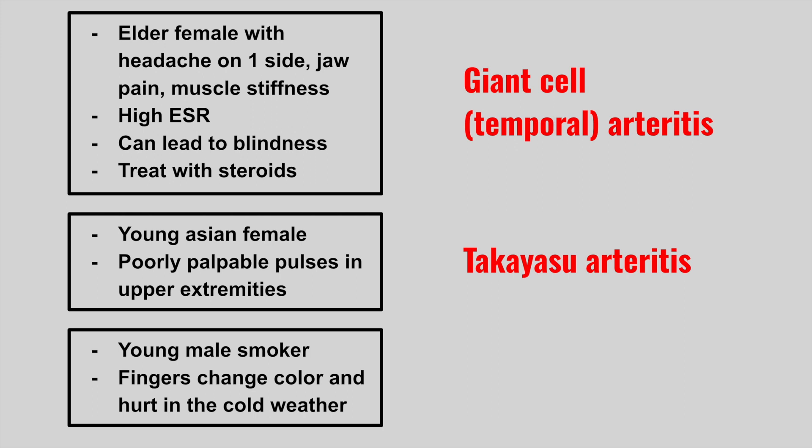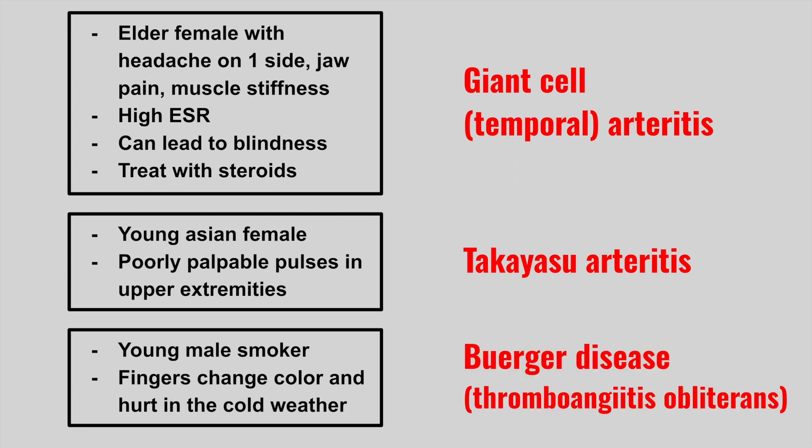Next, we have a young male smoker whose fingers change color and hurt in the cold weather. So this is Buerger disease, also called thromboangiitis obliterans. Remember, this condition presents with a Raynaud's phenomenon, which is why the fingers change in the cold weather, and it is treated with smoking cessation.